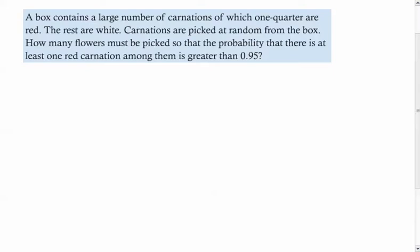I'm going to use my reading voice. A box contains a large number of carnations, of which one quarter are red, the rest are white. So I've got the probability of red is one quarter, the probability of white is three quarters, right?